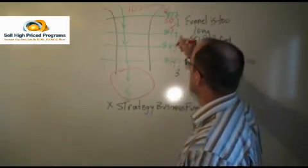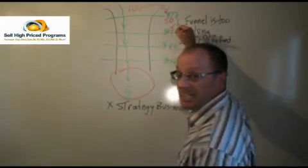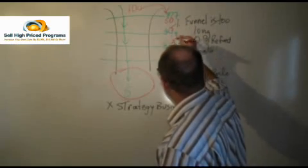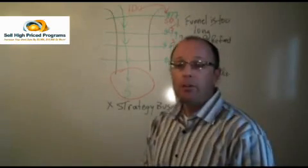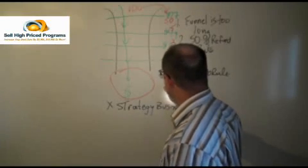Remember our 70-30 rule. That means 15 people get to here. Three people get to here. One person gets to here.